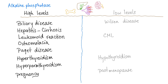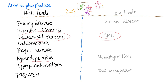Hyperparathyroidism is related to bone, and pregnancy causes high ALP because of the placenta. Low levels of alkaline phosphatase are seen in Wilson's disease — a liver condition — and CML. Notably, alkaline phosphatase is high in leukemoid reaction but low in chronic myeloid leukemia. ALP is high in hyperthyroidism but low in hypothyroidism. If ALP is high in pregnancy, it will be low in a post-menopausal woman.